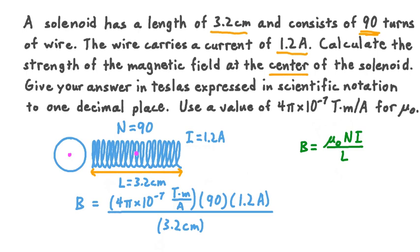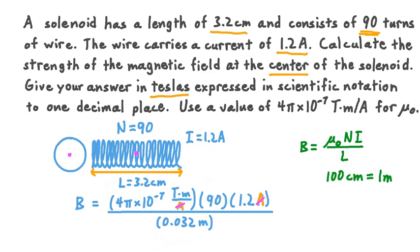Before we calculate this magnetic field strength, notice that the units of amperes cancel out in our numerator, and in the numerator we have units of meters while in the denominator we have a distance unit in centimeters. To give our answer in teslas, we'll need our distance units to cancel out, so let's convert the solenoid length from centimeters into meters. Since 100 centimeters equals 1 meter, 3.2 centimeters is 0.032 meters. Now the distance units in numerator and denominator cancel out, leaving units of teslas. When we calculate B, we get a result of 4.2 × 10⁻³ teslas.